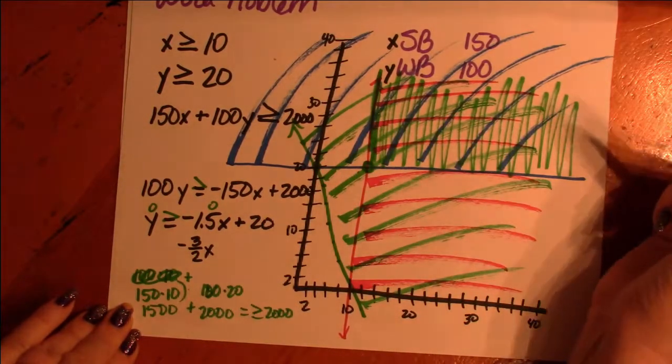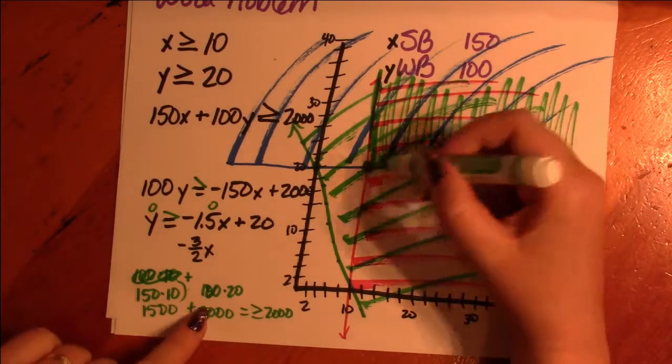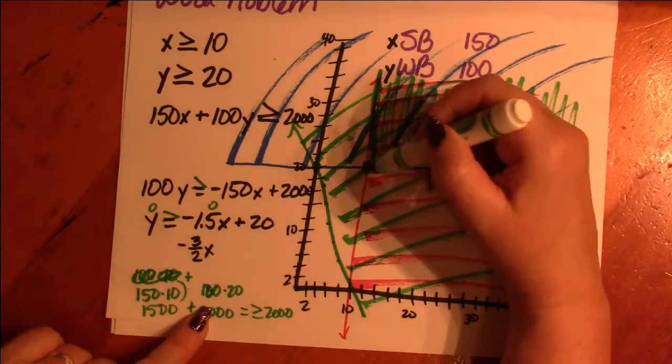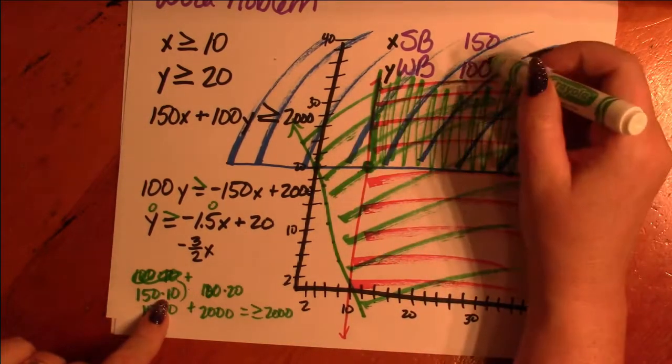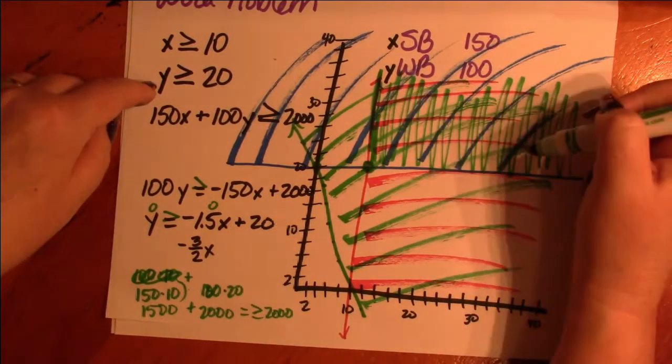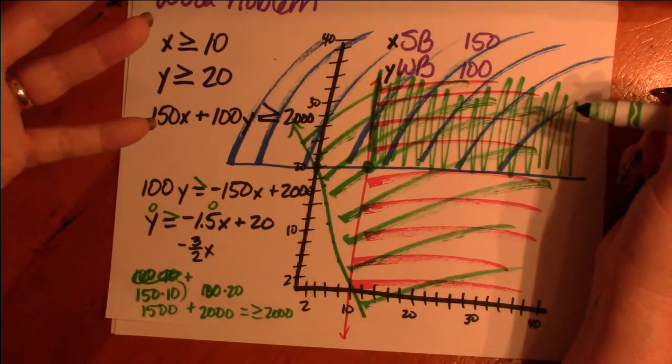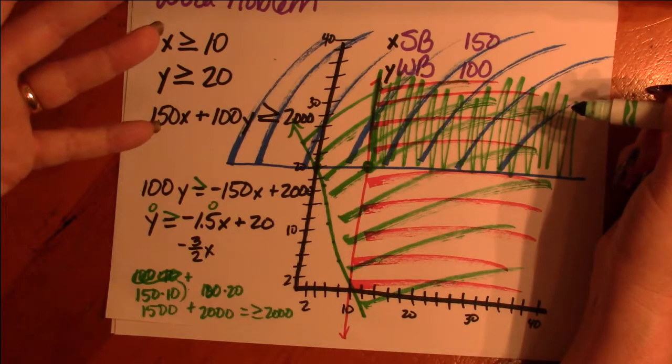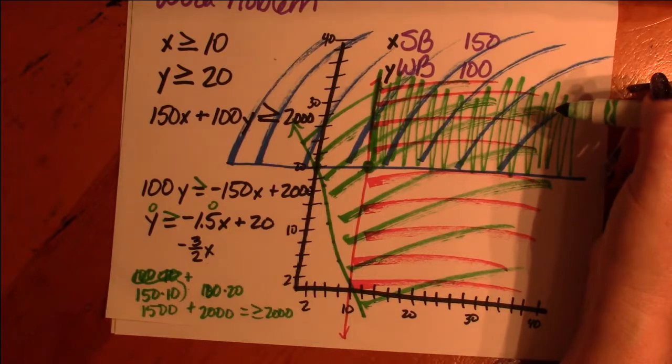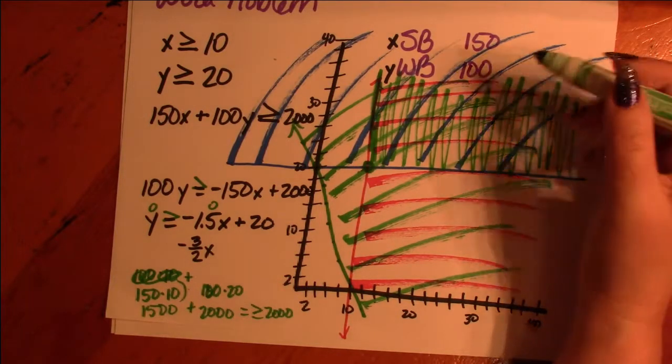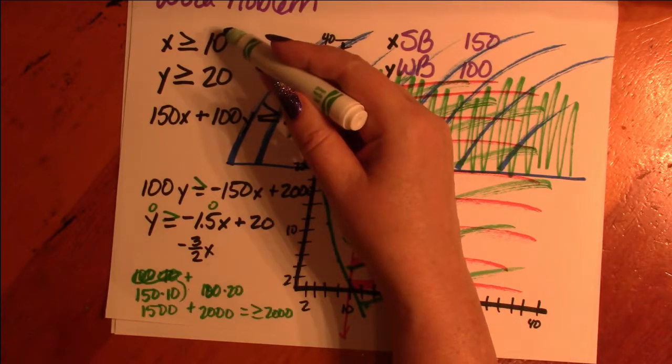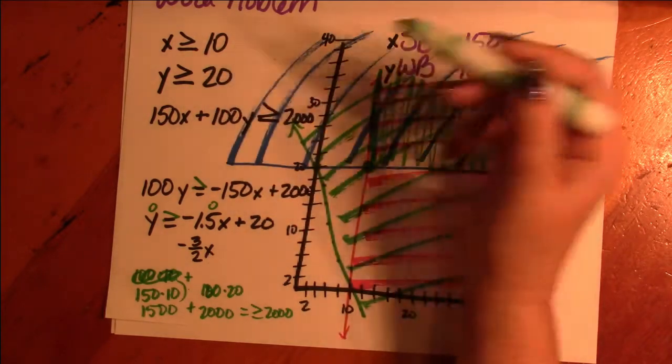And apparently it's just not going to be that hard because that is the minimum number of wakeboards and surfboards that we can make. So anything over 10 here and anything over 20 here is good. As long as it's an integer, it'll work. And you're going to find two possible combinations. So your book suggests 15 surfboards and 25 wakeboards, and 25 surfboards and 20 wakeboards. And all of that works.